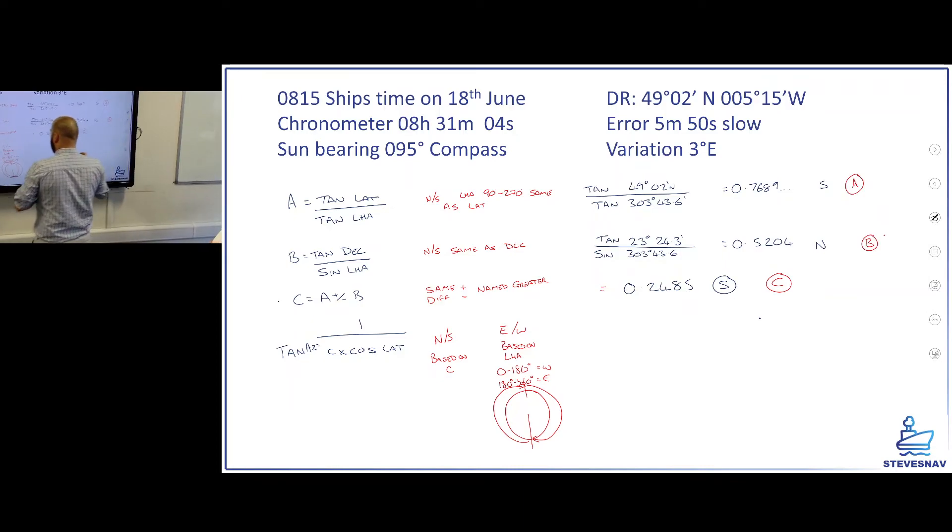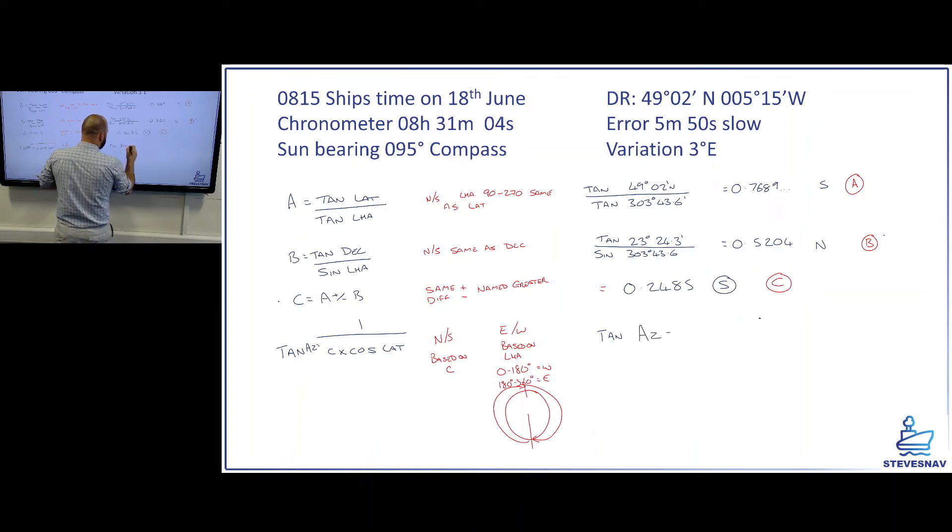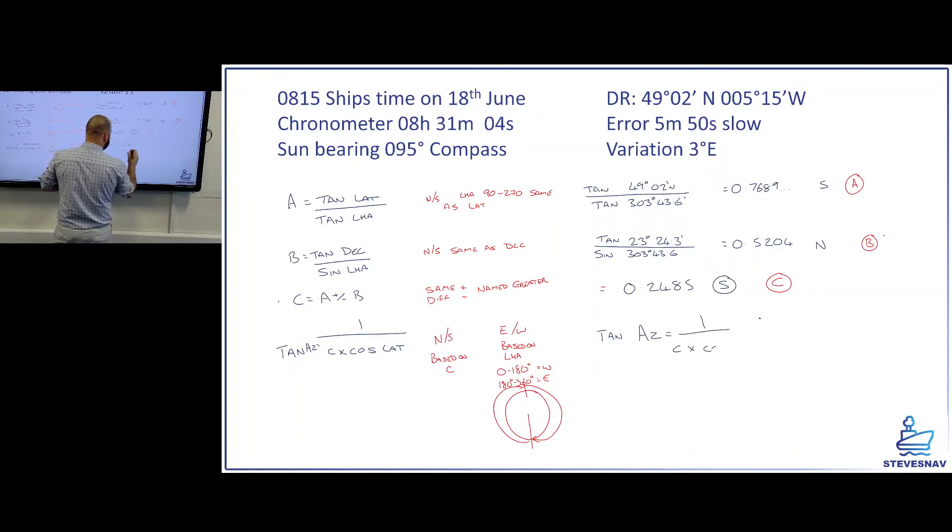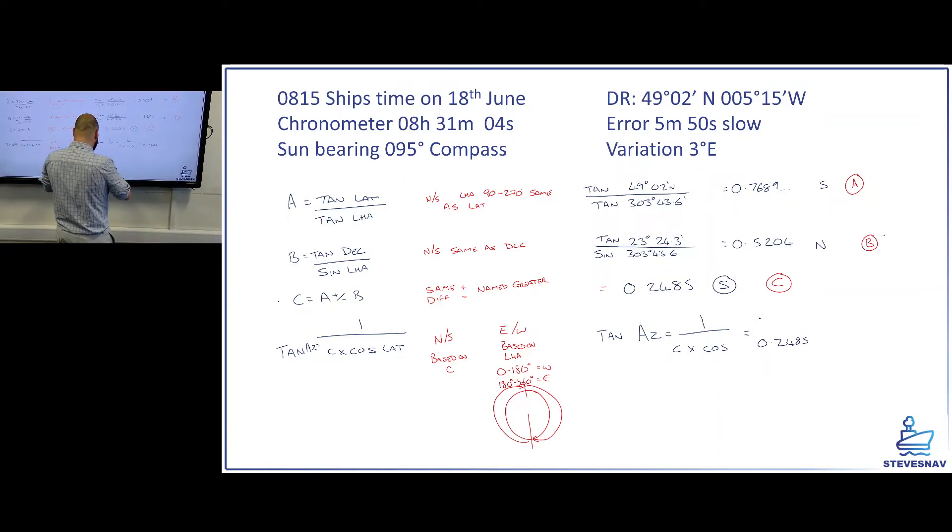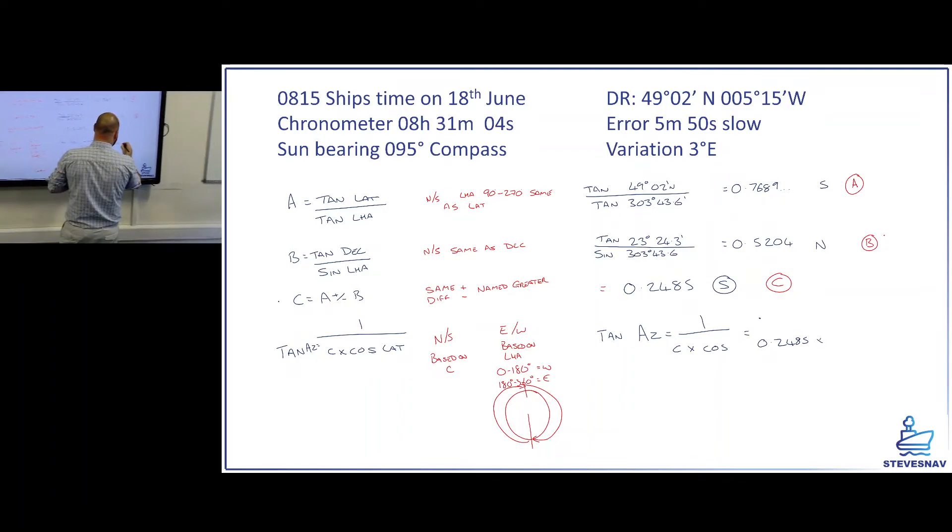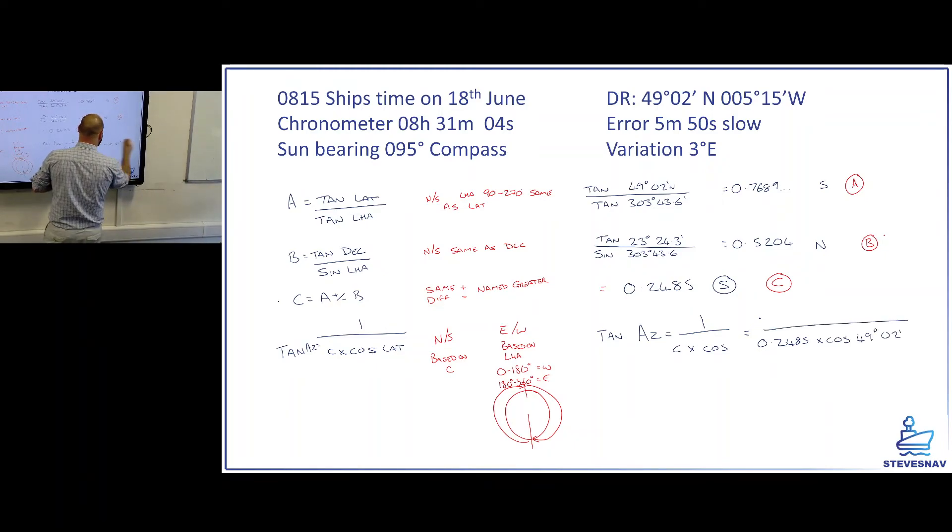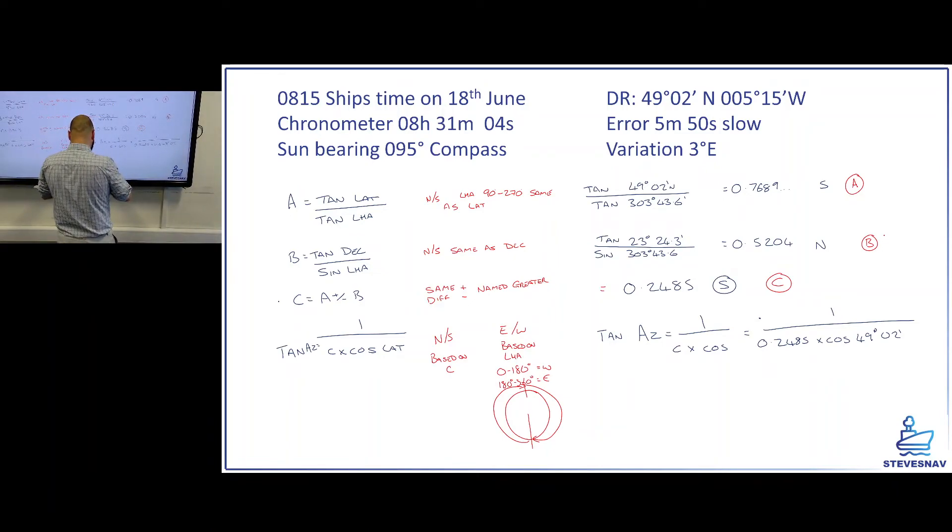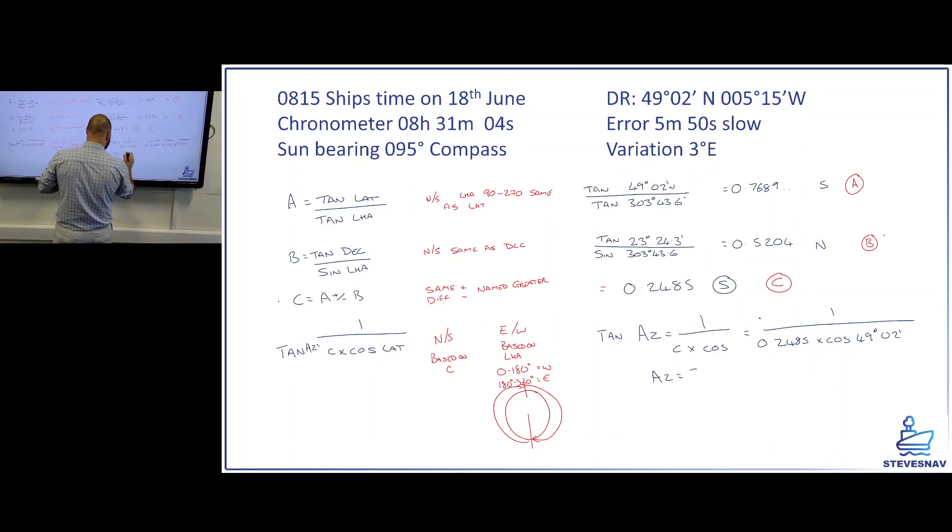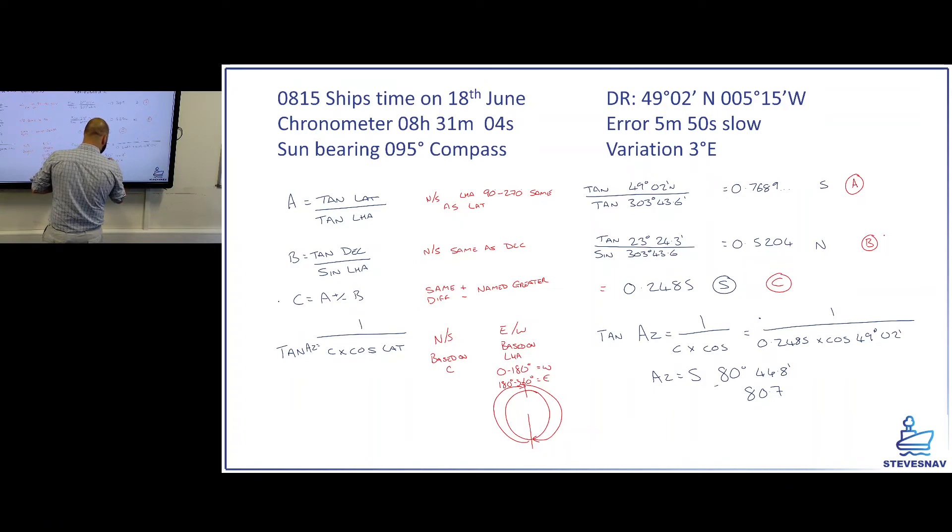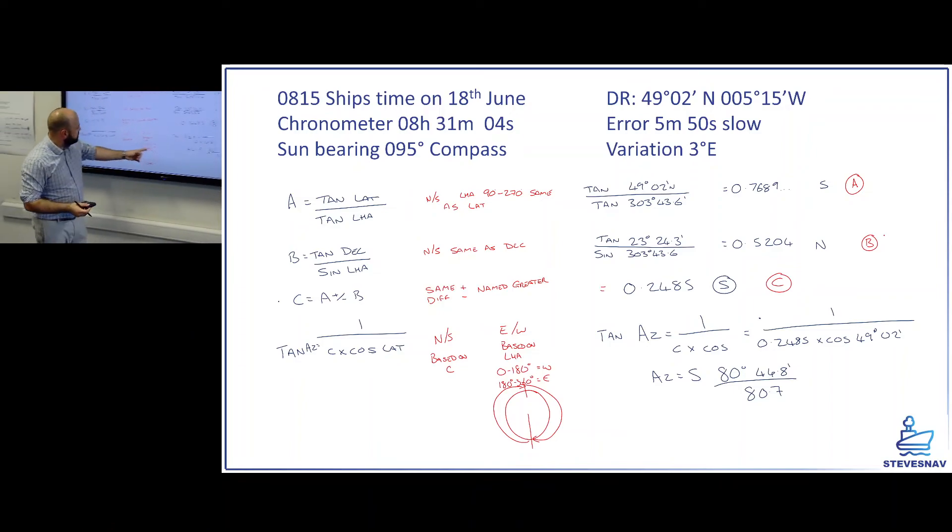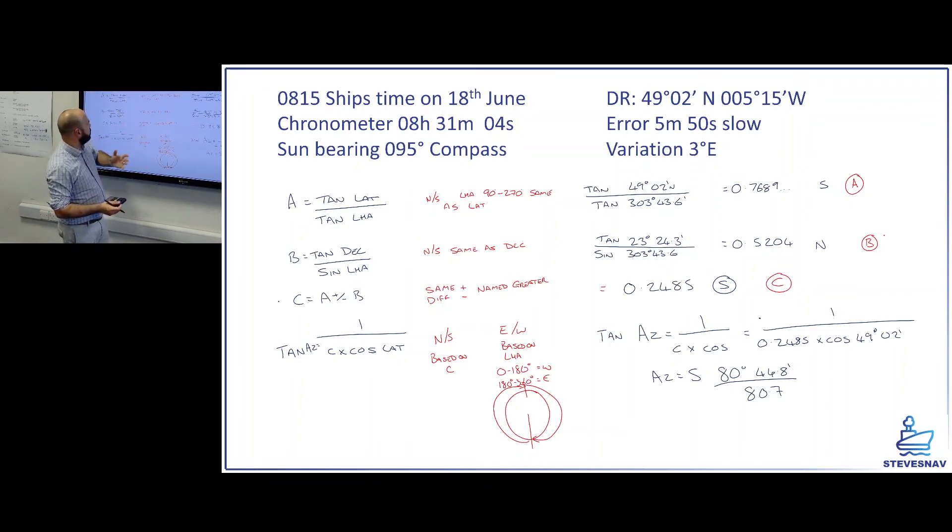So the tan of the azimuth is 1 divided by C times cos lat. So that's going to be 1 divided by 0.2485 times the cos of 49 degrees 2 minutes. So we've typed that into our calculator. That gives us the tan of it, so we shift tan to the minus 1. And that tells us the azimuth equals, same as C south, 80.7 degrees or 80 degrees 44.8 minutes. Or 80.7 degrees and what level of accuracy do you want to let it do? Examiner said he likes that level of accuracy for maths. And then our LHA, if it's west it's going to be 0 to 180. If it's east it's 180 to 360. Ours was 303 so it's going to be east.